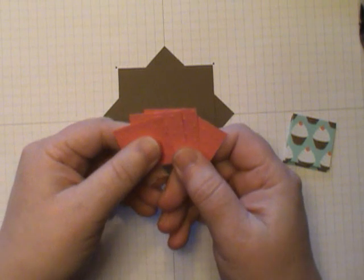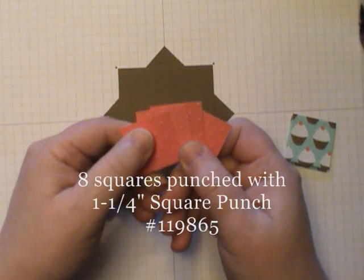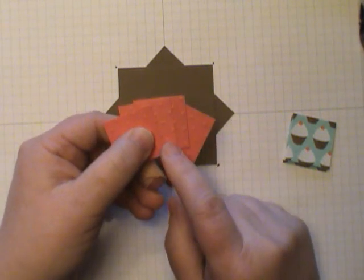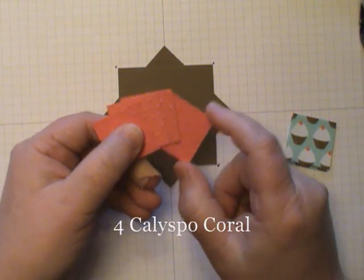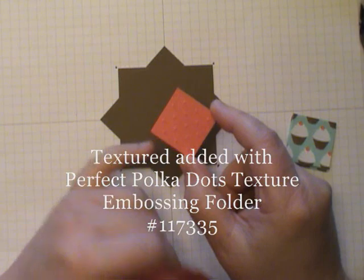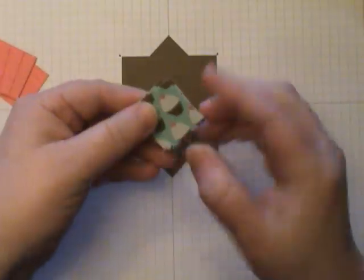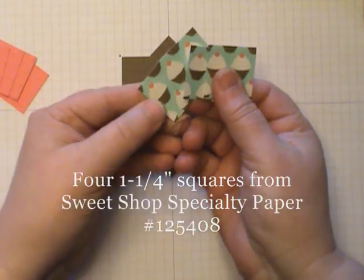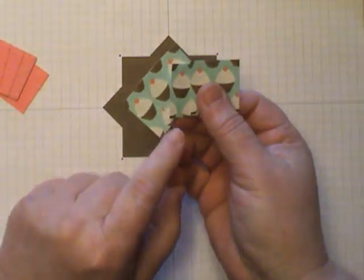Next you'll need eight squares that are measured 1 1/4 inch. Now four of mine are Calypso Coral and I've actually added some texture with them with the Perfect Polka Dots texture embossing folder. And then my other four are from the Sweet Shop, this cute little cupcake design.